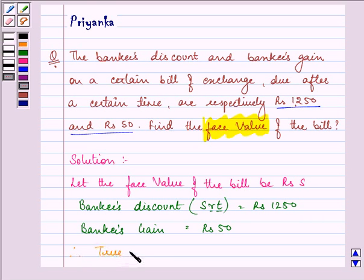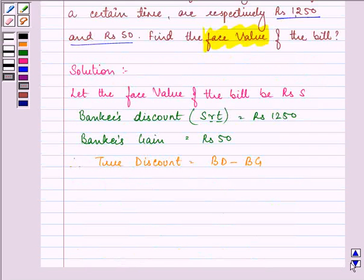We have true discount as banker's discount minus banker's gain. That is, Rs. 1250 minus Rs. 50, that is, Rs. 1200.